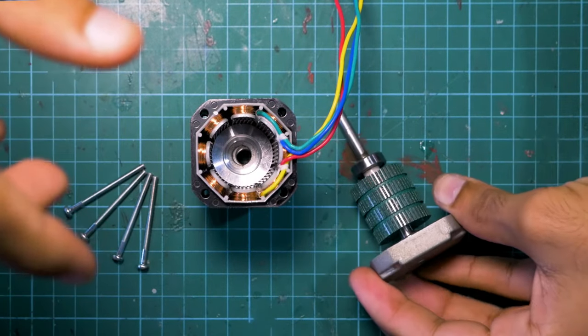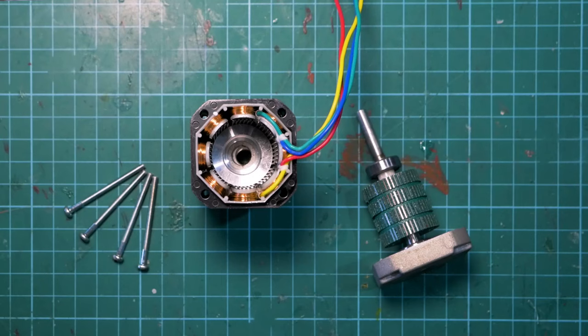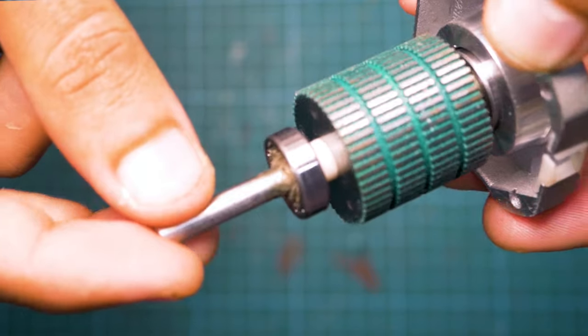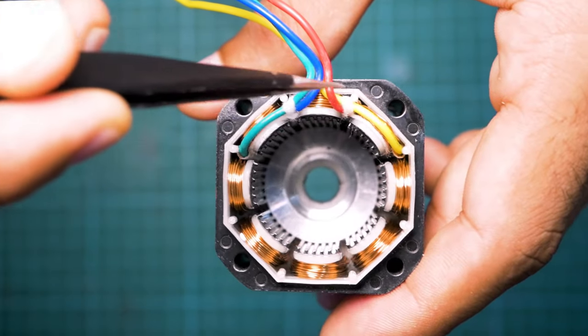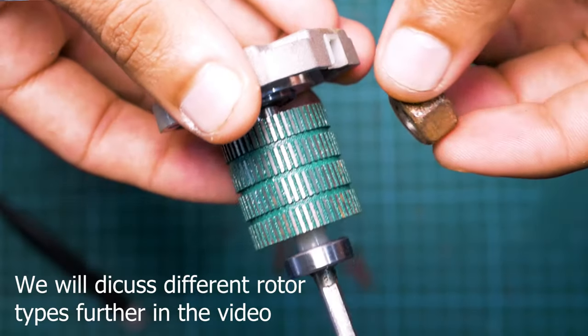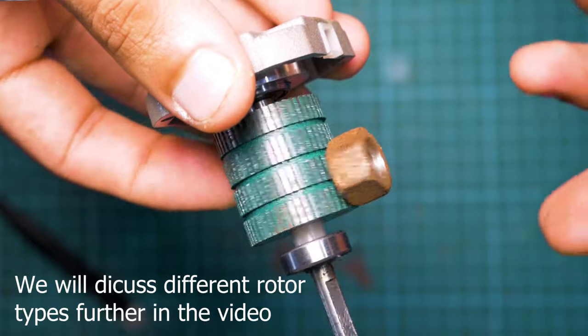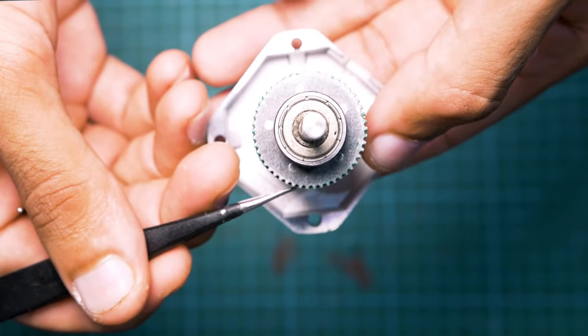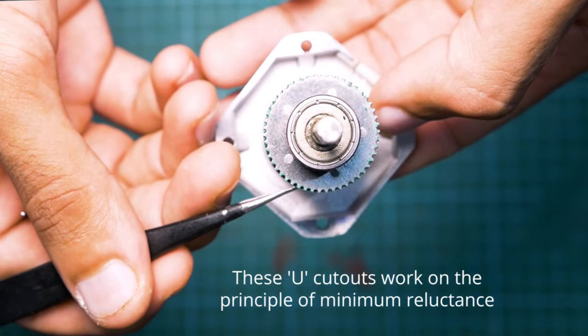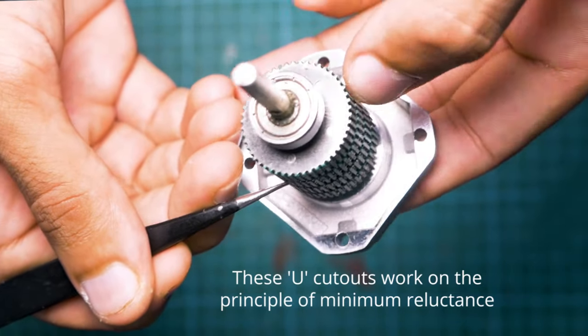Tearing apart this common stepper motor found in 3D printers, we can see that there are two main parts to a stepper motor: the rotor and the stator. The stator in this motor contains multiple electromagnets while the rotor is a permanent magnet itself. If you look even closer at the rotor, we can see these U-shaped cutouts. What these do is help channel magnetic force, and later we will discuss them in more detail.